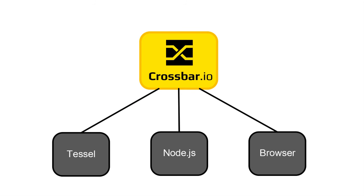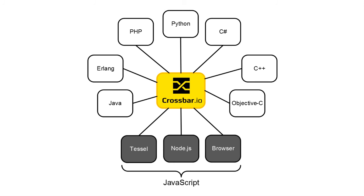In our alarm app we've only used JavaScript components, but with Crossbar you can have components in other languages as well. If you want to have an application that mixes Python, PHP, C-sharp, JavaScript, and Erlang, Crossbar makes it possible.